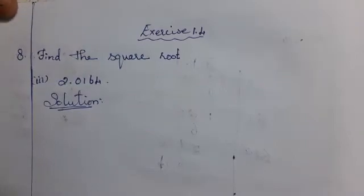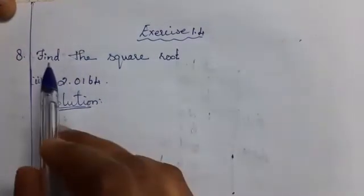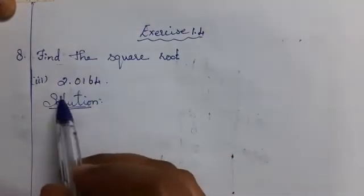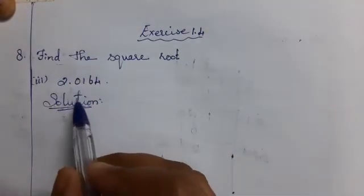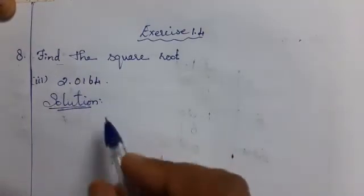Hi students, hope you are all fine. X is 1.4, 8th question, find the square root, 3rd part: 2.0164.